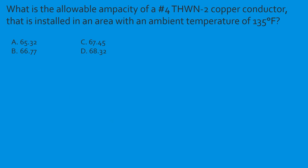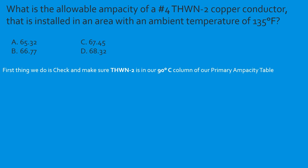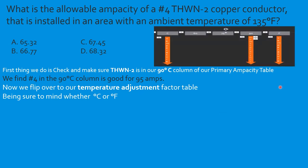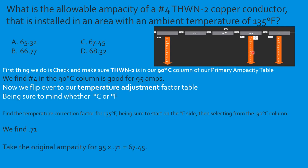Question: What is the allowable ampacity of a number 4 THWN-2 copper conductor installed in an area with an ambient temperature of 135°F? Confirm insulation is rated in the 90°C column. Number 4 in the 90°C column is good for 95 amps. Go to the temperature adjustment table, Fahrenheit side, find 135°F, tee off with 90°C — correction factor is 0.71. So: 95 × 0.71 = 67.45 amps. Select C.